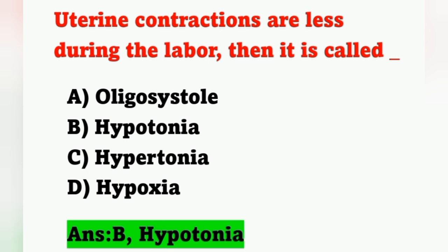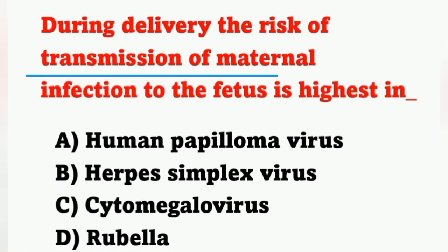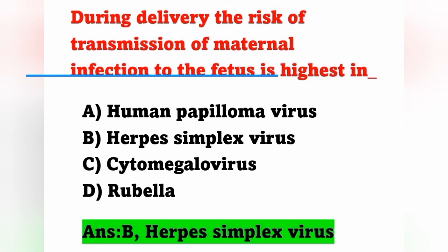The next question: during delivery, the risk of transmission of maternal infection to the fetus is highest with — options: A: human papillomavirus, B: herpes simplex virus, C: cytomegalovirus, D: rubella. The viral infection most highly transmitted from mother to fetus during delivery is herpes simplex virus — option B is the correct answer.